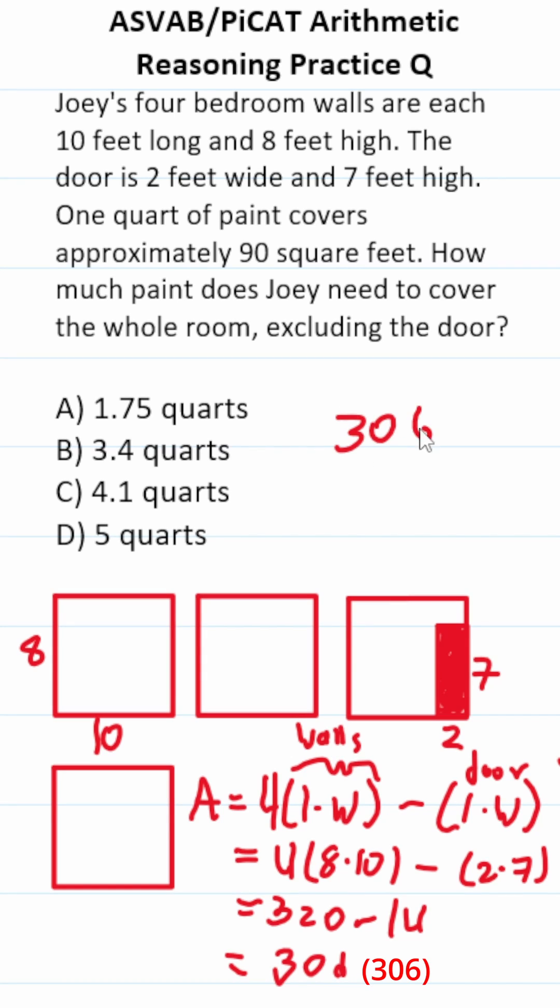So in other words, we have to paint 306 square feet. We know a quart of paint covers 90 square feet, so let's do this division here.